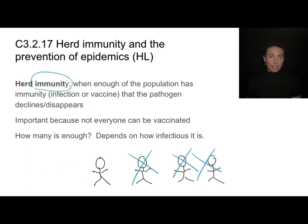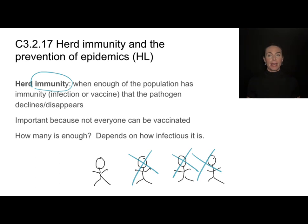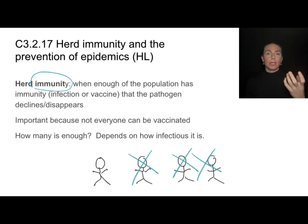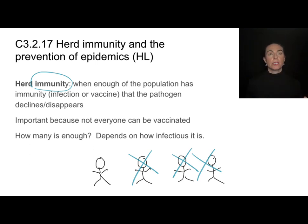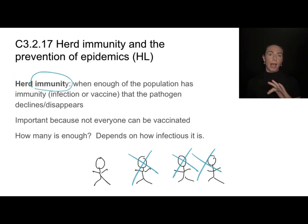What percent of the population needs to have immunity in order to achieve herd immunity depends on how infectious that pathogen is. If it is not very infectious, you can lower the percentage of people who need immunity because that virus or bacteria is spreading very slowly anyway. The more infectious the pathogen is, the higher the percentage of people that must have some kind of immunity in order for herd immunity to be established and to eradicate that pathogen from the wider population.